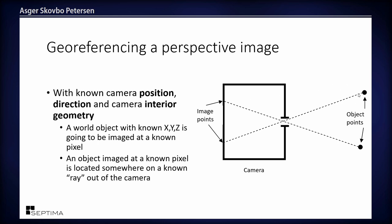You have objects in space out in the world. If you know the exact position of the camera center, its rotation — the direction the camera is pointing — and the geometry of the camera's interior, you can calculate the straight line along which light travels from the object to the center, continuing on to the CCD. This gives you, from the XYZ of the object in space, the exact pixel at which the object is imaged.